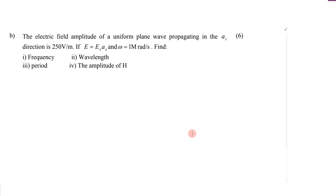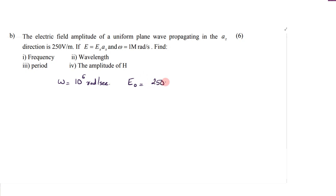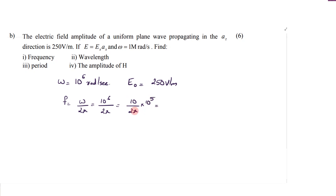This is another question — a very simple one. The data given specifies omega as 1 mega radians per second, that is 10^6 radians per second, and E0, the amplitude of the electric field, is given as 250 volt per meter. Nothing else is specified, so we assume free space. Frequency f is given by omega divided by 2 pi, that is 10^6 divided by 2 pi, giving 1.59 times 10^5 hertz.